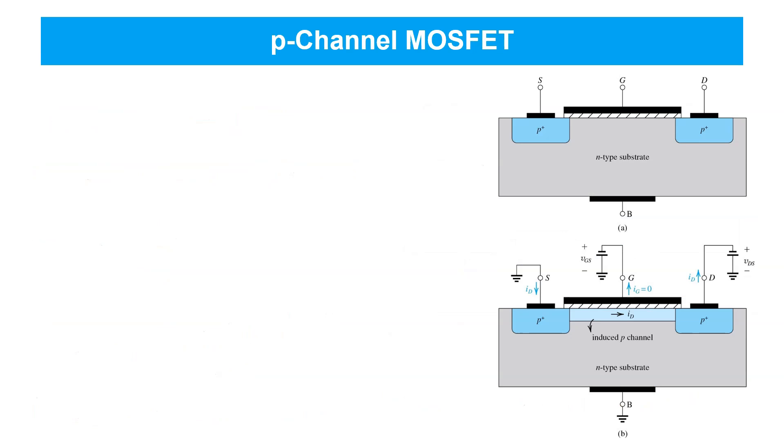So far, we've focused on the N-channel MOSFET, or NMOS device, but many or most electronic circuits will also make use of P-channel MOSFETs, or PMOS devices. These have a P-type source and drain region embedded in an N-type substrate for the body.